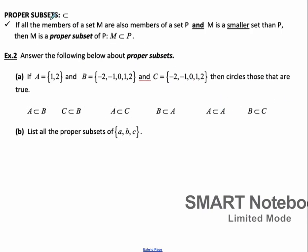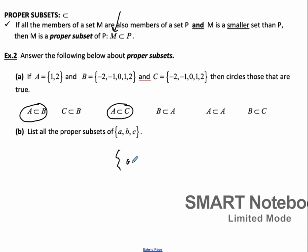A proper subset symbol means that unless the little line is not there, they can't be equal. So everything in M is also in P, but they can't be equal to each other. So with the same sets as before, some are still true, like A is a proper subset of B. But C and B are equal, so they're not proper subsets of each other. A is a proper subset of C. The proper subsets would be all the ones listed before except the set itself, so there would be 7 proper subsets.